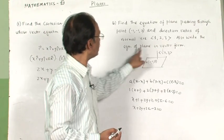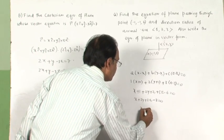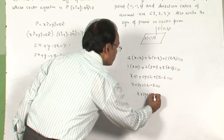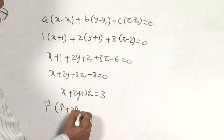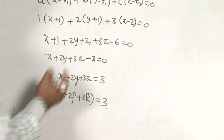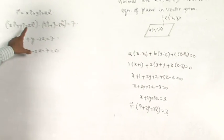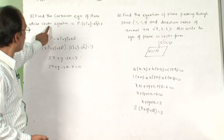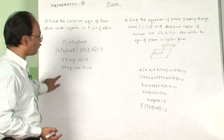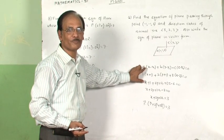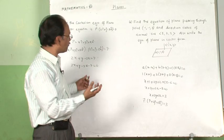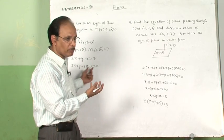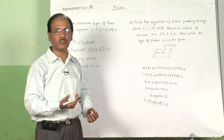You are also asked to write the equation in vector form, which is easy. This can be written as r dot (i + 2j + 3k) = 3. This is the answer. You are converting the plane's equation from Cartesian form to vector form. You should be able to convert from one form to another, as it helps when you do not remember a particular formula.